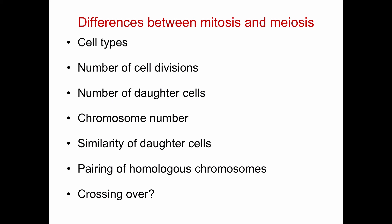The last two comparison points are yes or no questions: do homologs pair in mitosis? No — there is no homolog pairing in mitosis, but they do pair in meiosis in prophase one. Does crossing over happen in mitosis? No — there's no homolog pairing, so there's no crossing over. Crossing over only happens in meiosis.